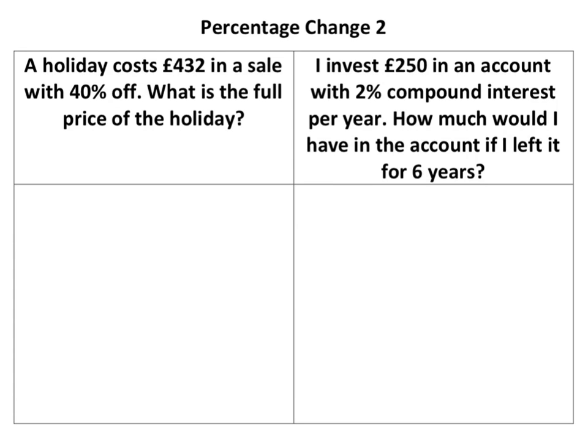We're looking at percentage change and finding an original amount, or compound interest, or repeated percentage change. A holiday costs £432 in a sale with 40% off.